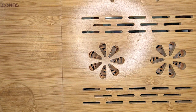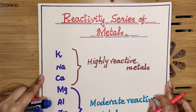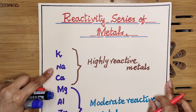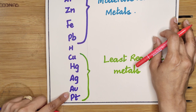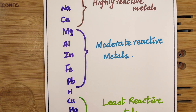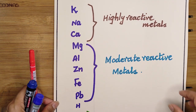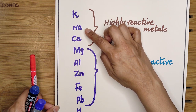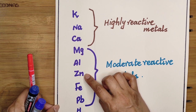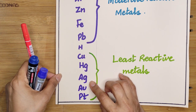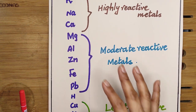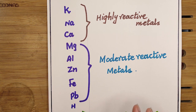Here is the complete reactivity series of metals: potassium, sodium, calcium, magnesium, aluminium, zinc, iron, lead, hydrogen, copper, mercury, silver, gold, and platinum. To memorize it, we can use a mnemonic: 'Please Stop Calling Me A Zebra For I Have Come To Say Hi, Assalamu Alaikum Au Pt.' Pause the video and try to memorize this mnemonic.